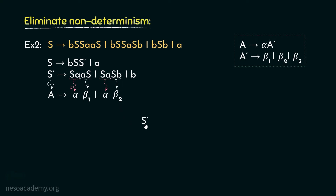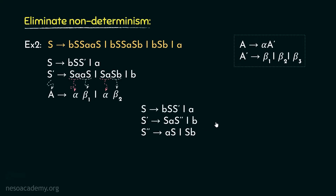So the modified production rules are: S' can be rewritten as SA (the common prefix) followed by a new non-terminal S''. S'' will generate the betas, so S'' can be rewritten as AS or SB. Since S' can also derive B, we include that rule too. So the entire deterministic CFG is: S → BS S' | A; S' → SA S'' | B; S'' → AS | SB. In this set, we have eliminated all the non-determinism.